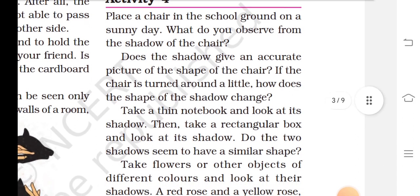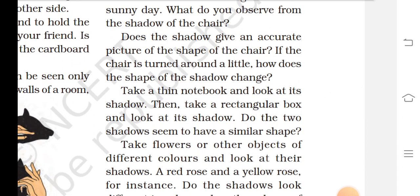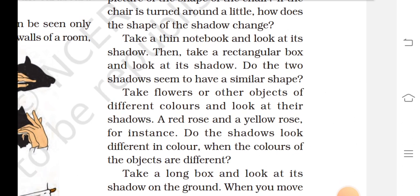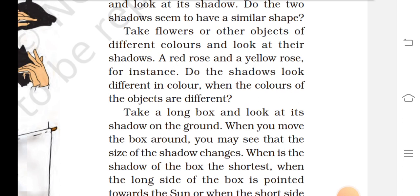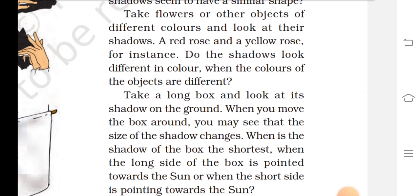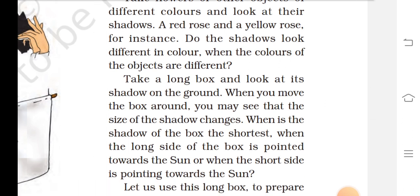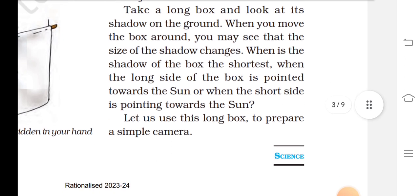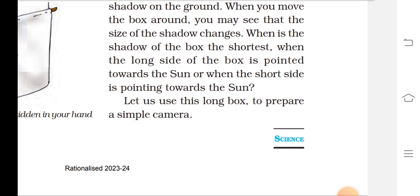Place a chair in the school ground on a sunny day. What do you observe from the shadow of the chair? Does the shadow give an accurate picture of the shape of the chair? If the chair is turned around a little, how does the shape of the shadow change? Take a thin notebook and look at its shadow. Then take a rectangular box and look at the shadow. Do the two shadows seem to have similar shapes? Take flowers or other objects of different colors and look at their shadows. A red rose and a yellow rose, for instance. Do the shadows look different in color when the colors of the objects are different? Take a long box and look at its shadow on the ground. When you move the box around, you may see that the size of the shadow changes.